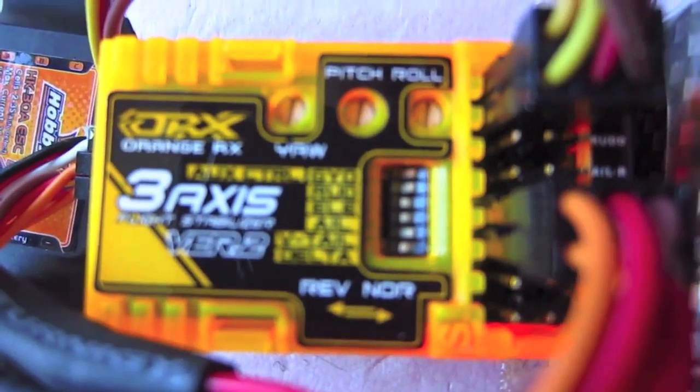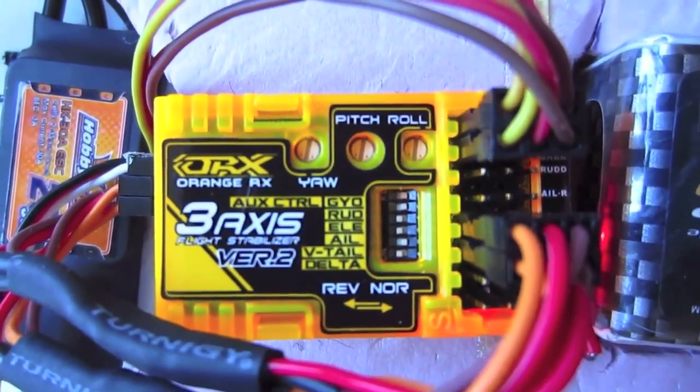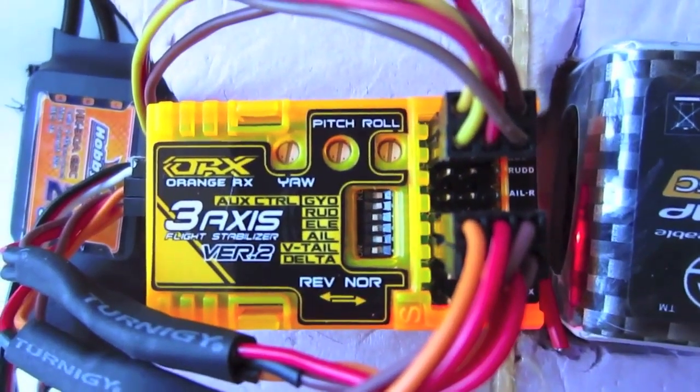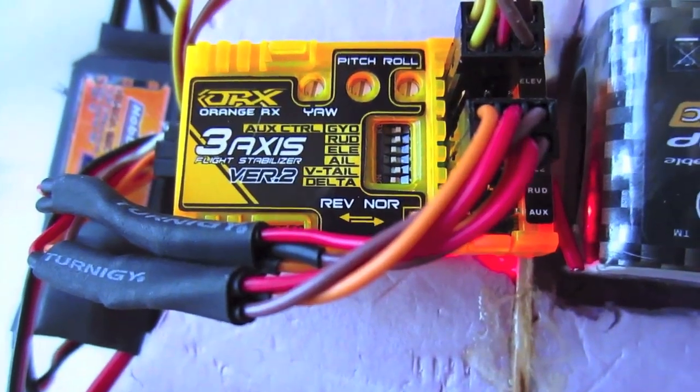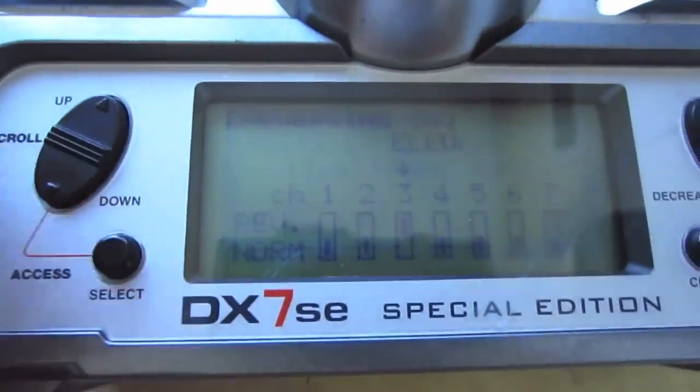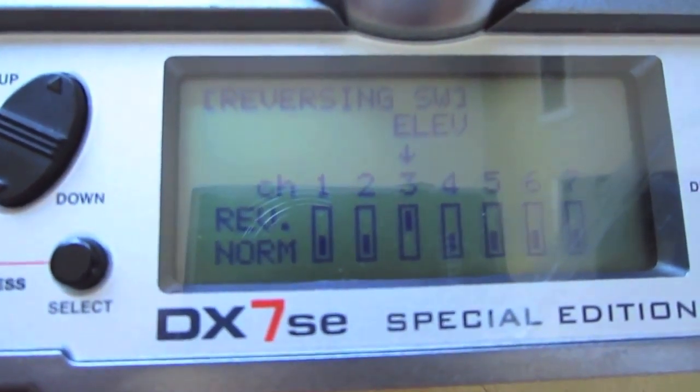And then I had to flip these little switches in here, if you can see these. I had to flip the delta to the left, and the elevator and Aileron little dip switches to the left. And then in my transmitter, I had to reverse the elevator output. And that's it.